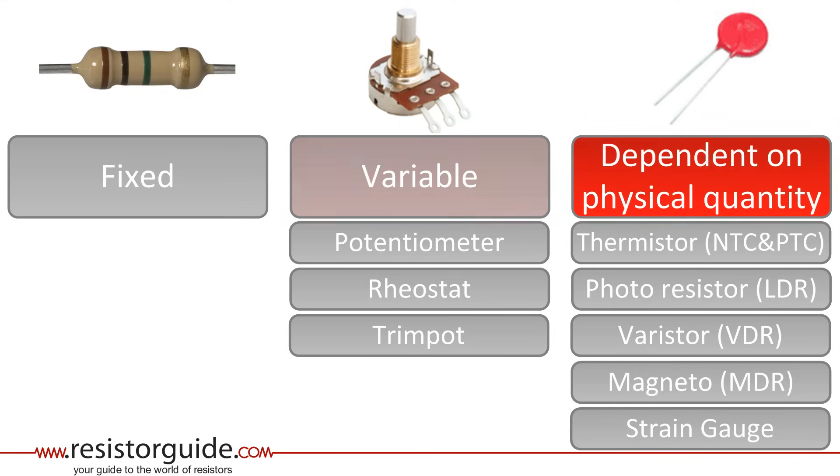A third category are resistors which have a varying resistance dependent on a physical quantity, such as light, temperature or voltage. They are often used as measurement devices.